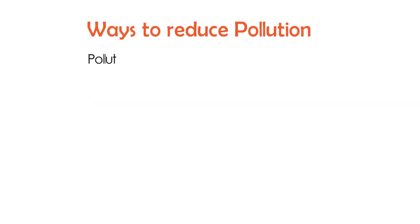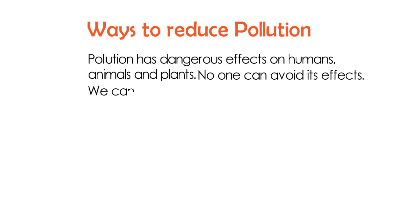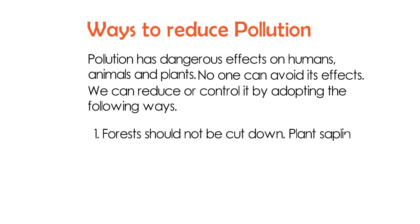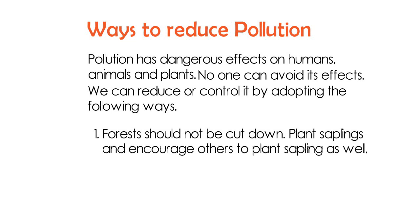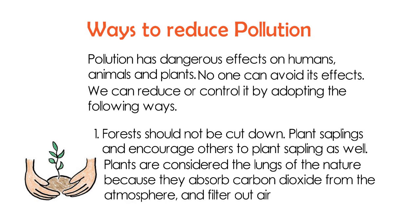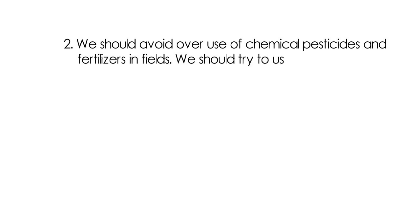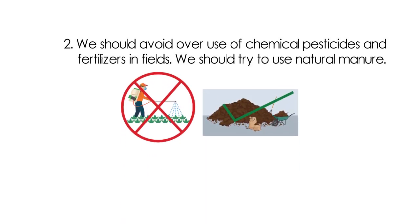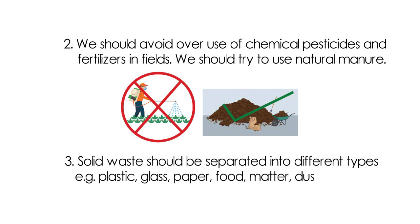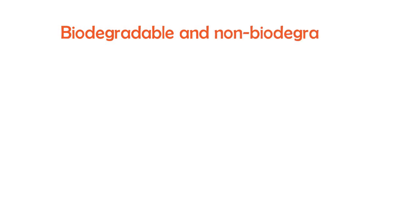Ways to reduce pollution: pollution has dangerous effects on humans, animals, and plants. We can reduce or control it by adopting the following ways. Forests should not be cut down; plant saplings and encourage others to plant saplings as well. Plants are considered the lungs of nature because they absorb carbon dioxide from the atmosphere and filter out air pollution. We should avoid overuse of chemical pesticides and fertilizers in fields and try to use natural manure. Solid waste should be separated into different types — plastic, glass, paper, food matter, dust waste, etc. — because different waste is treated differently.